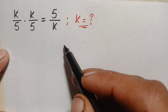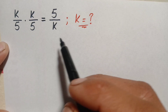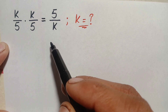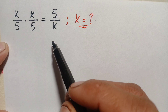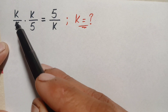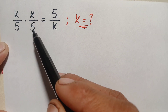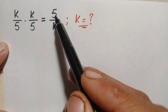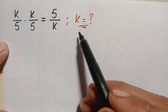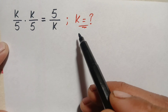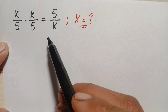Hello everyone, you are welcome to Math Explorer. How to solve this nice algebra math problem, which is k/5 times k/5 is equal to 5/k. So here we will try to find out the value of k. How can we solve this math problem?